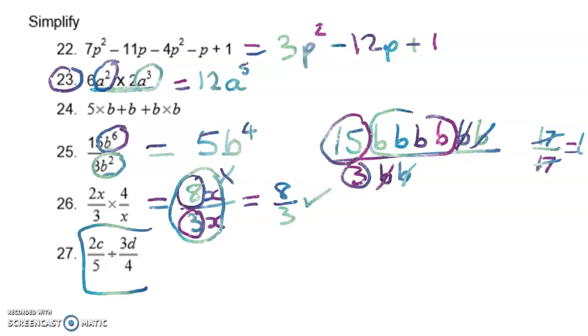On to the next one. This is a division problem and it works just like number fraction division. When I see a fraction and I'm dividing by a fraction, I multiply by the reciprocal. So it's 2c/5 times 4/3d. Now I can multiply the numerators and I get 8c. And I multiply the denominators and I get 15d. But I'm not finished. I have to stop and I have to look. I've got 8 and I've got 15. Is there a common factor? Nope. What about the c and the d? Is there a common factor? No. So this answer is finished. That's as far as it can go.